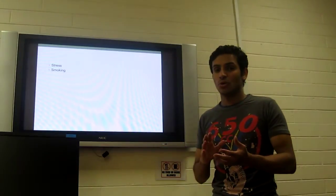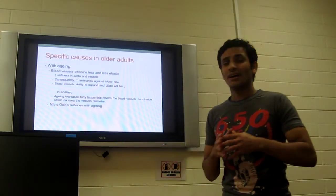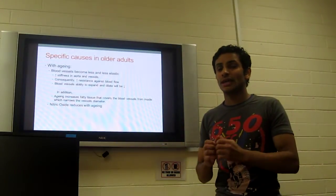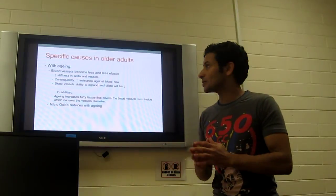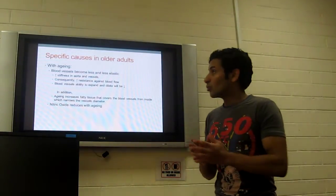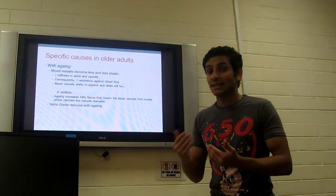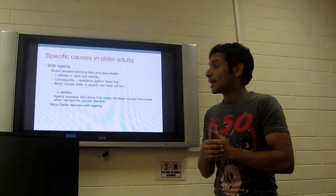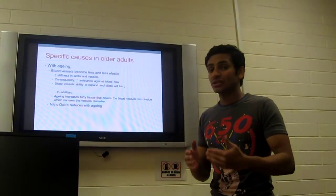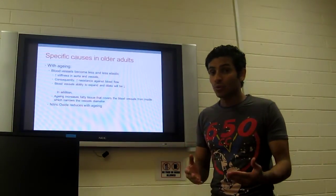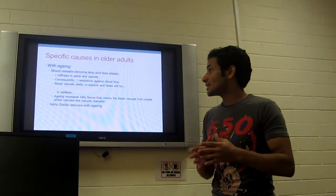There are other factors such as stress and smoking. But what are the specific causes in older adults? With aging, blood vessels become less and less elastic. That will increase stiffness in aorta and vessels and consequently increase resistance against the blood flow.